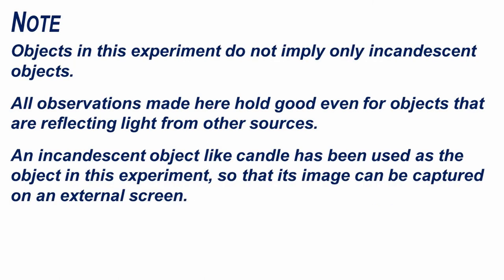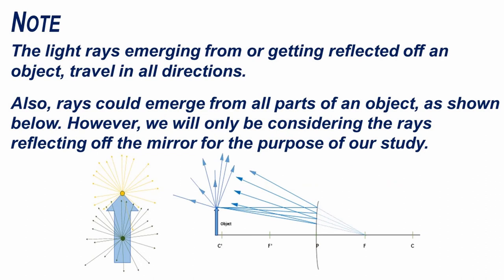Note: objects in this experiment do not imply only incandescent objects. All observations made here hold good even for objects that are reflecting light from other sources. An incandescent object like a candle has been used so that its image can be captured on an external screen. The light rays emerging from or getting reflected off an object travel in all directions and could emerge from all parts of an object, but we will only be considering the rays reflecting off the mirror for the purpose of our study.